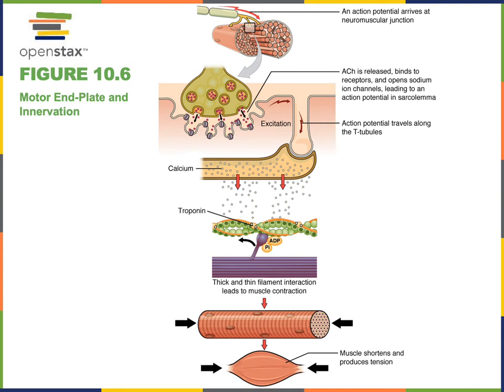The neuromuscular junction consists of the axon terminal, which is the end of the motor neuron that releases neurotransmitters to excite the skeletal muscle fiber. The name of that neurotransmitter is acetylcholine, abbreviated ACh. The motor end plate is the region of the muscle fiber sarcolemma surface that contains the neurotransmitter receptors. These receptors are ion channels activated by acetylcholine, known as nicotinic acetylcholine receptors.